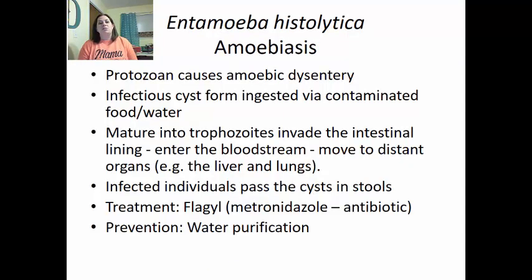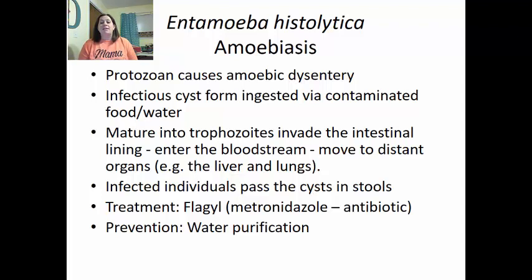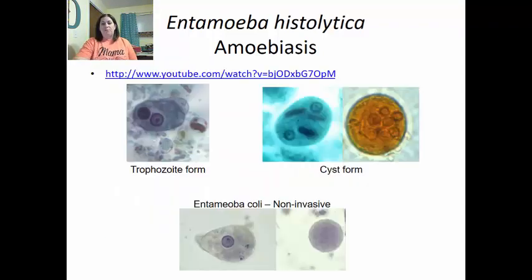Entamoeba histolytica causes amoebic dysentery. It moves through pseudopods. The infectious cyst form is ingested via contaminated food or water, matures into the trophozoite, invades the intestinal lining, and can enter the bloodstream to travel to distant organs like the liver and lungs. Infected individuals pass cysts in their stools. Treatment is Flagyl and prevention is water purification. Entamoeba coli is the non-invasive type.